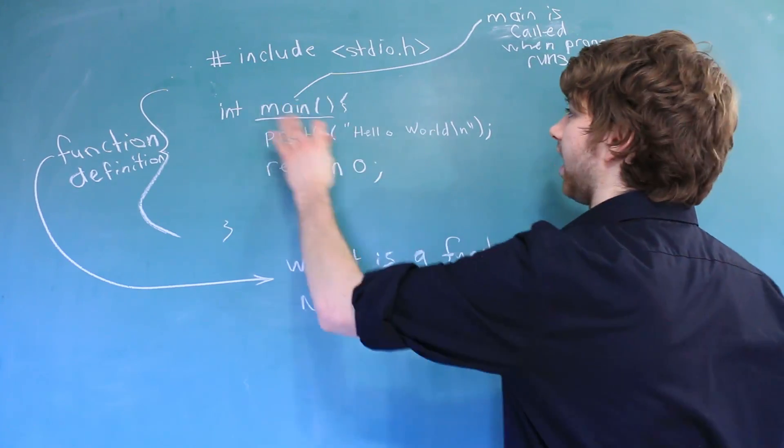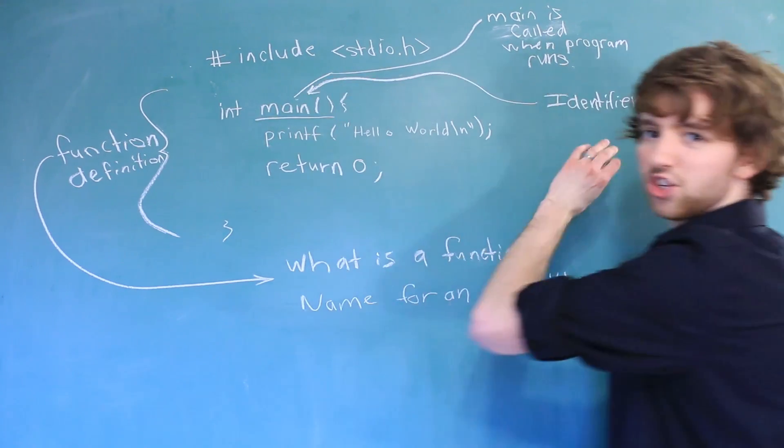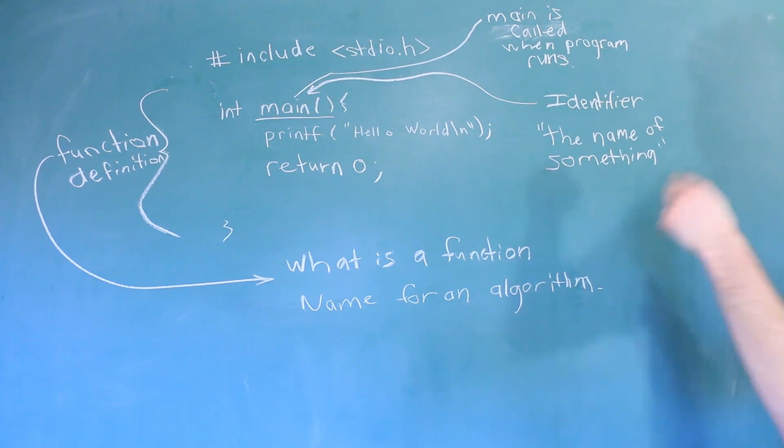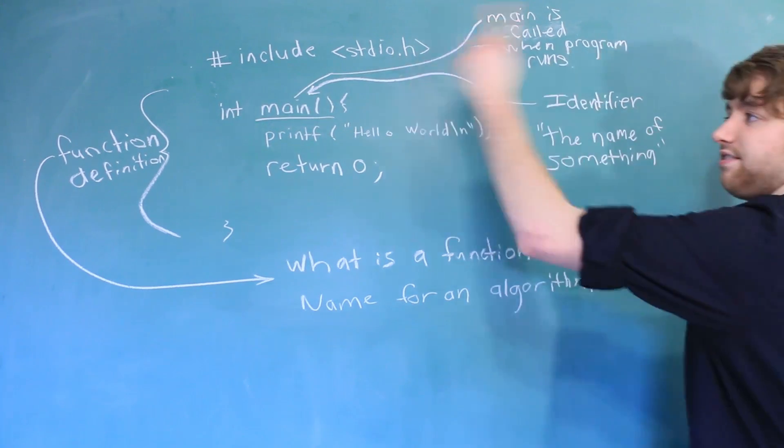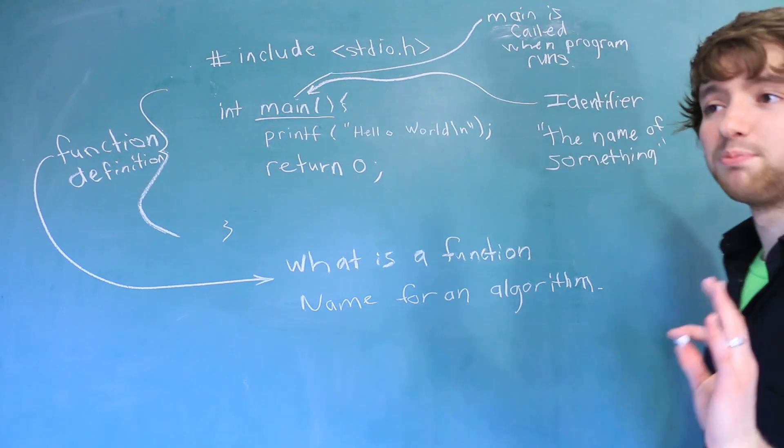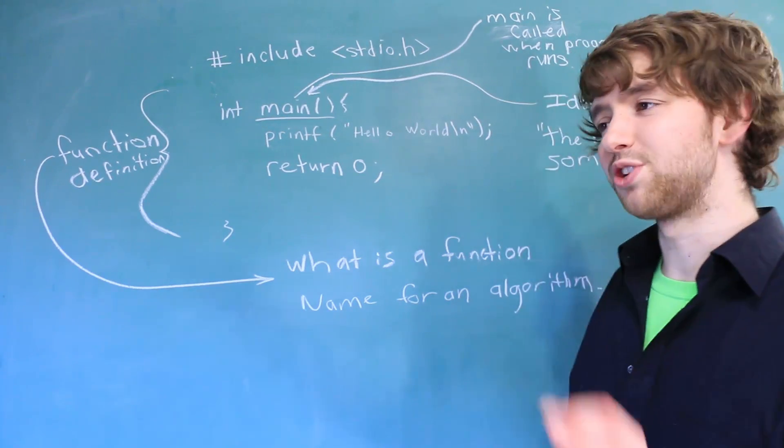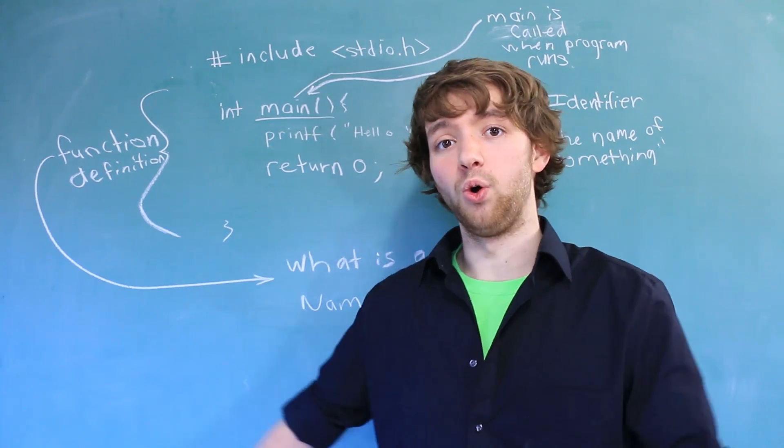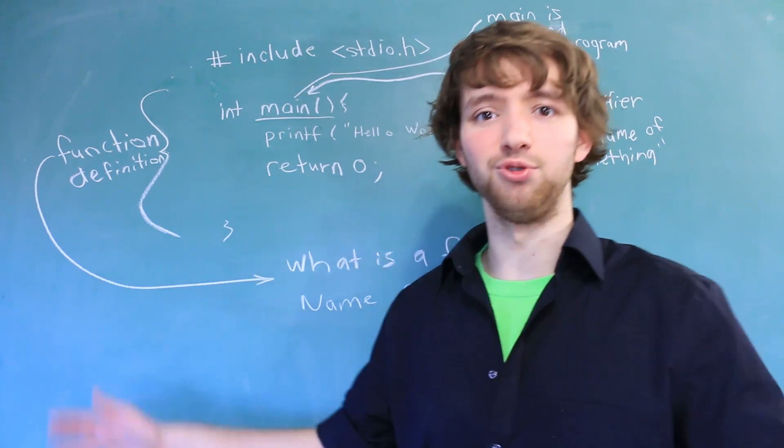Now this thing here is called the identifier. That is a general term to mean the name of something. So in this case, the identifier of this function is main. Identifier is a very computer science-y term, so be sure to throw that in your sentences if you want to impress the ladies, or turn them away because that happens too with computer science.